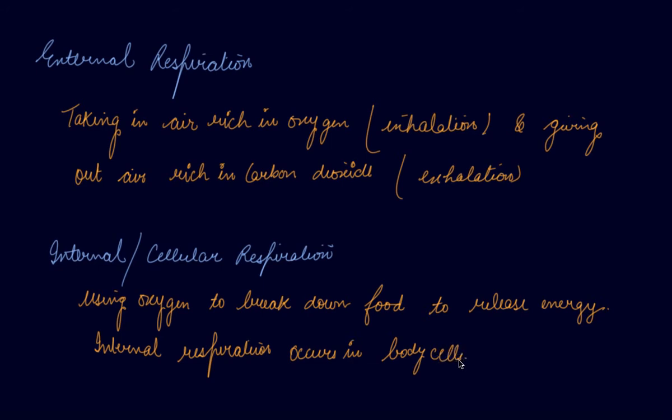Cellular respiration takes place in the cells of the body. In the cells, food — that is glucose — is broken down into carbon dioxide and water using oxygen. When the breakdown of glucose occurs with the use of oxygen, it is called aerobic respiration. When glucose is broken down without the use of oxygen, it is known as anaerobic respiration.